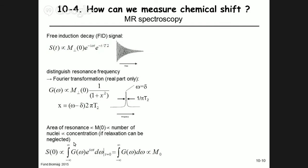The signal at time zero equals the Fourier transform evaluated at t = 0, which equals the integral of the Fourier transform. This is a simple Fourier property that establishes the link: the area of the resonance is proportional to M(0), which is proportional to M₀. We will use this relationship again next week.